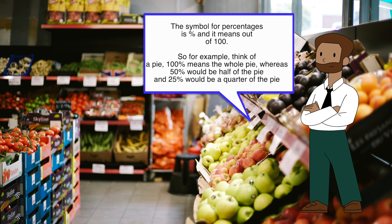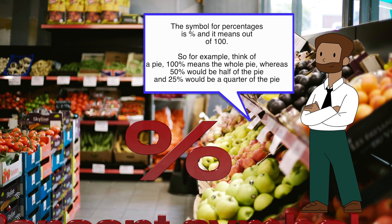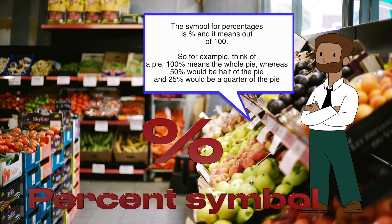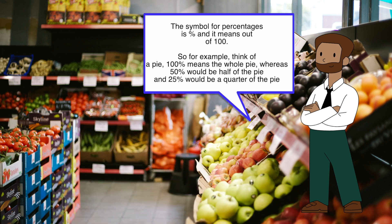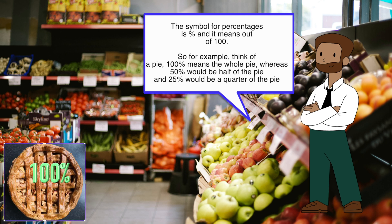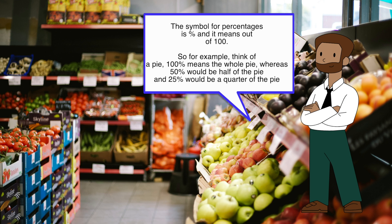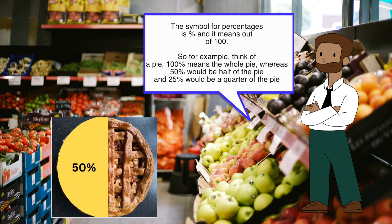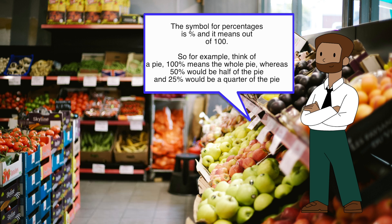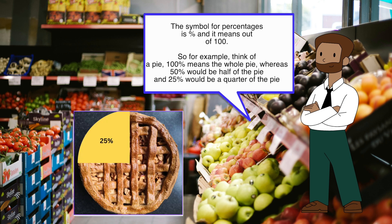The symbol for percentages is as shown on the screen, and it means 'out of 100.' For example, think of a pie: 100 percent means the whole pie, whereas 50 percent would mean half the pie, and 25 percent would mean a quarter of the pie.